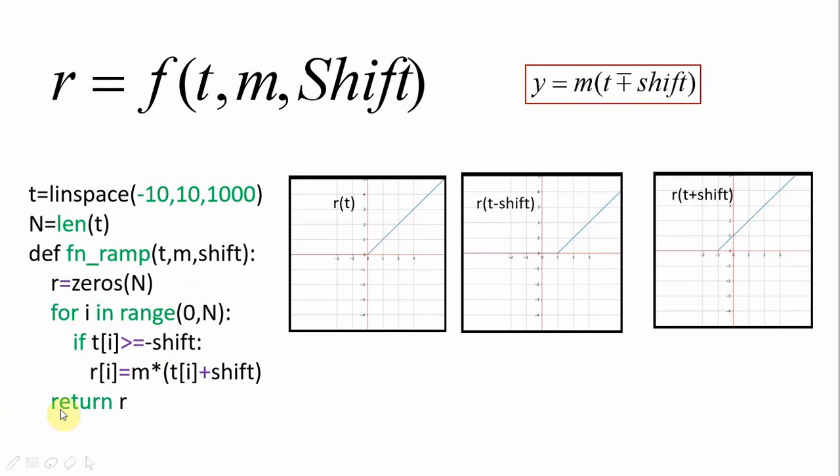If this condition is not satisfied, leave it as it is, that is it is a 0 itself. For any value of i between 0 to 1000, if any time instant satisfies this condition then corresponding to that value in the array of zeros replace that 0 by the value calculated as per this equation, then return the function after completing the loop from 0 to n.